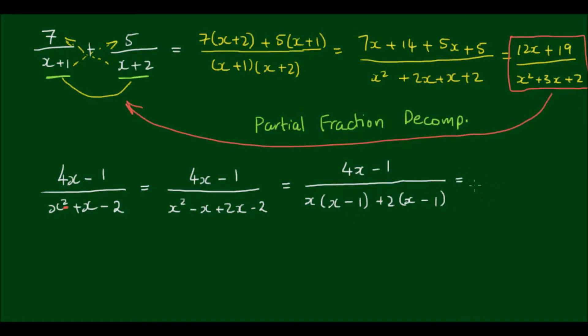And then I can further factorize to (x+2) times (x-1), and I still have the numerator of 4x minus 1 on the top.